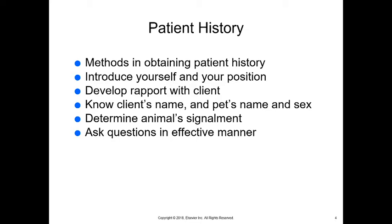You want to determine the animal signalment — that is the first thing you're going to determine when you look at your appointment book for the day. Animal signalment includes their species, breed, age, sexual status, and sometimes color. These are basic information points because certain breeds, species, ages, and sexual status will all give us clues as to what might be bringing the pet in that day.